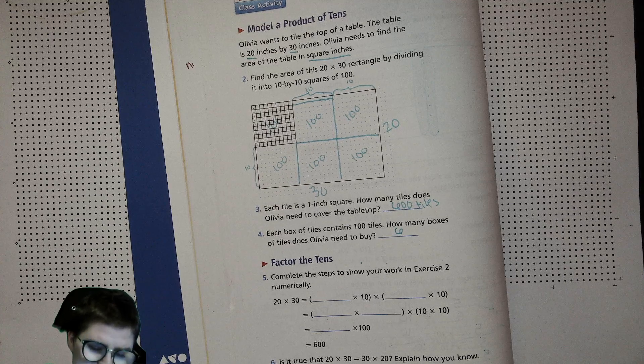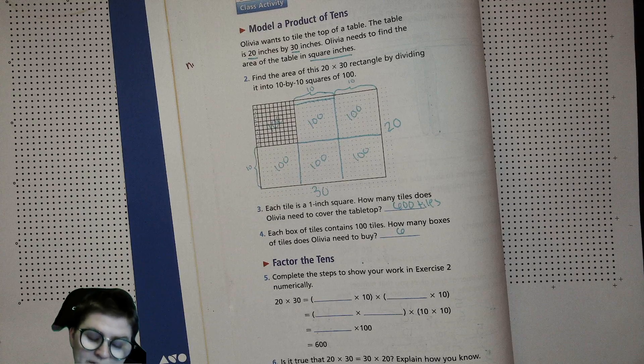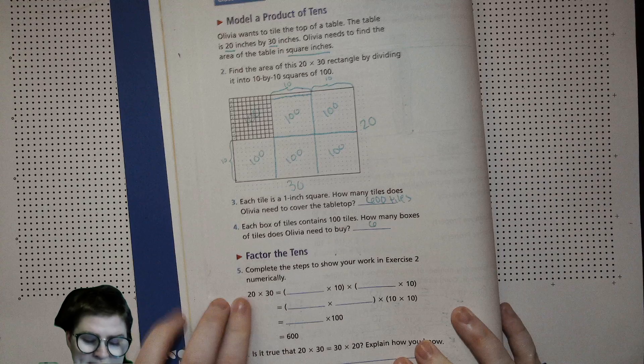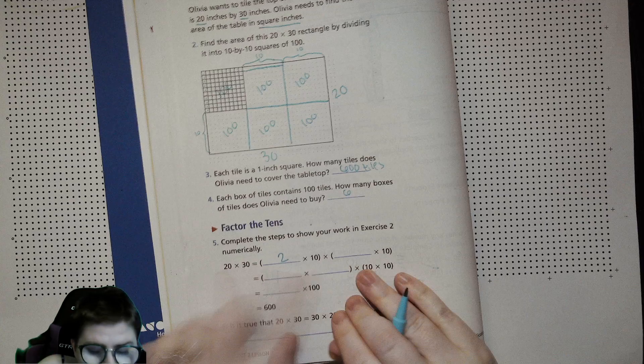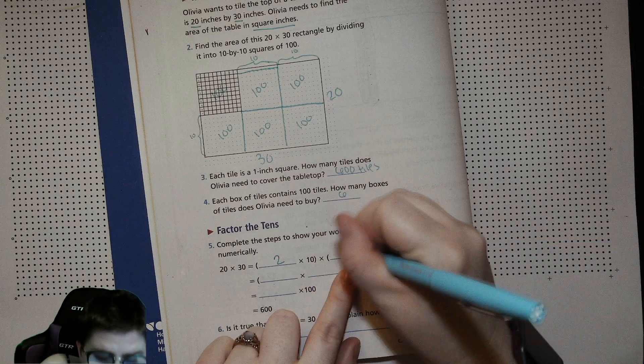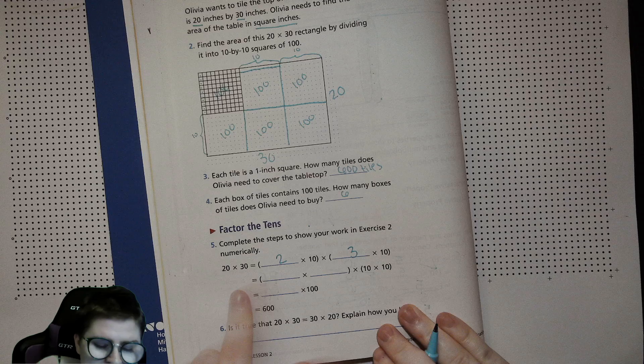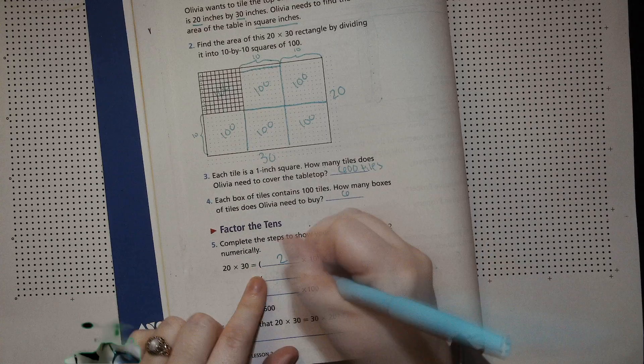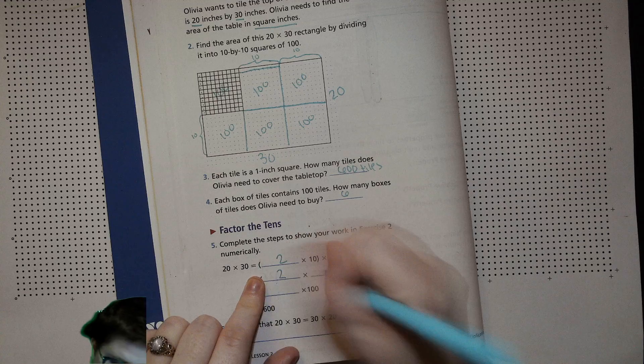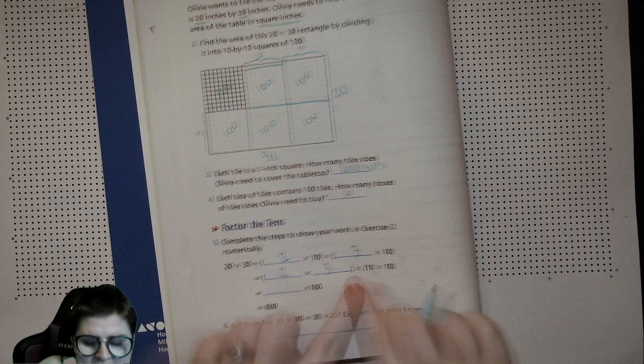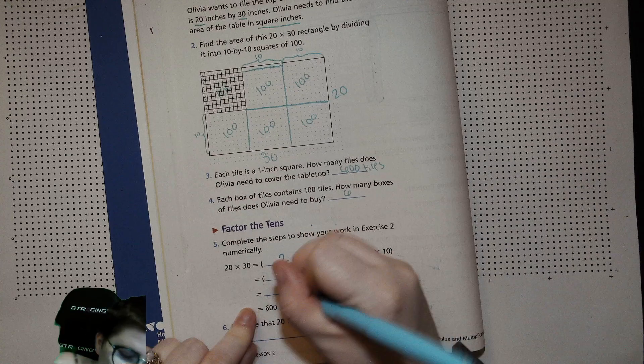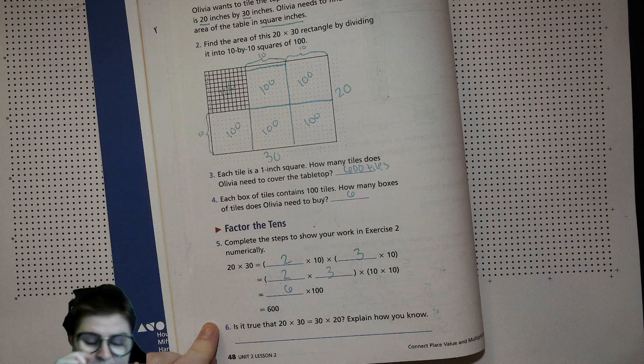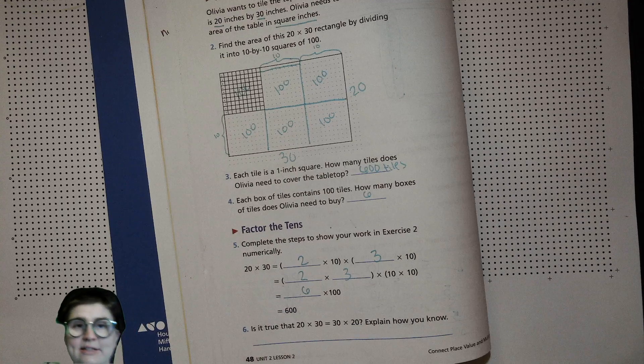Complete the steps to show your work numerically. What we did here, we had 20 times 30 and we transformed that into 2 times 10 and 3 times 10. Then we're going to do 2 times 3 times 10 times 10, and that 2 times 3 multiplies to 6, and then we have 600 because it's 6 times 100.